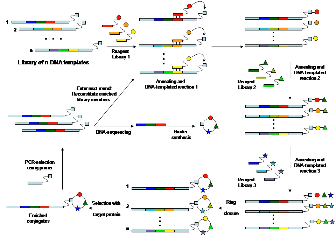DEL technology involves the conjugation of chemical compounds or building blocks to short DNA fragments that serve as identification barcodes, and in some cases also direct and control the chemical synthesis. The technique enables the mass creation and interrogation of libraries via affinity selection, typically on an immobilized protein target.